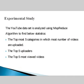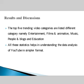In the experimental study, we identify the top five categories with the most uploaded videos, the top five uploaders, and the top five most viewed videos. The results are shown in graphical format using pie charts and bar graphs. The top five trending video categories — Entertainment, Films and Animation, Music, People and Blogs, and Education — are listed in a pie chart with different colors for each category, along with a table showing category name and total number of videos.